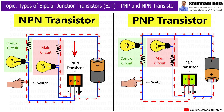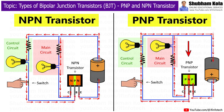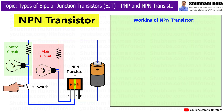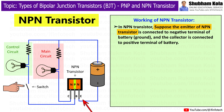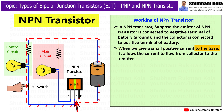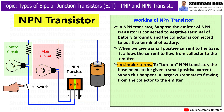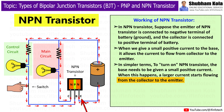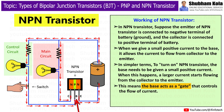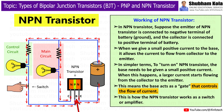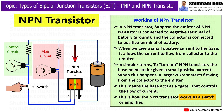First we will understand the working of NPN transistor, and then we will move to the working of PNP transistor. In an NPN transistor, the emitter is connected to the negative terminal of the battery and the collector is connected to the positive terminal. When we give a small positive current to the base, it allows current to flow from the collector to the emitter. The base acts as a gate that controls the flow of current, which is how the NPN transistor works as a switch or amplifier.